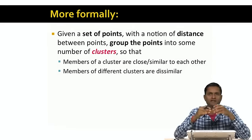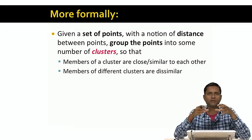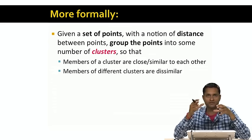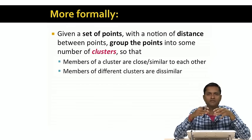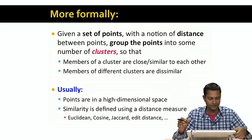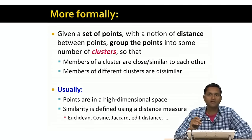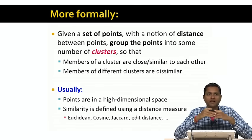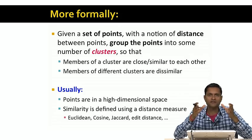More formally, given a set of points and a notion of distance between points, we want to group the points together into a number of clusters or groups. We want to group them so that members of a cluster are close or similar to each other, and members of different clusters are far away or dissimilar from each other. Usually the points will live in a high dimensional space — thousands or hundreds of dimensions — and similarity will be defined using a distance measure such as Euclidean, cosine, Jaccard, or edit distance.